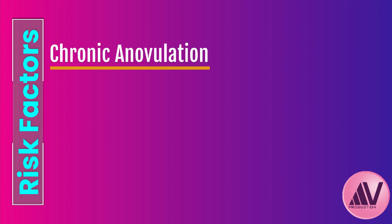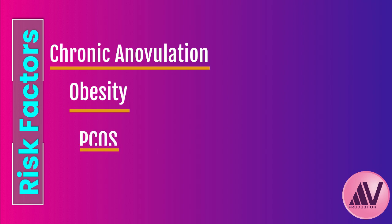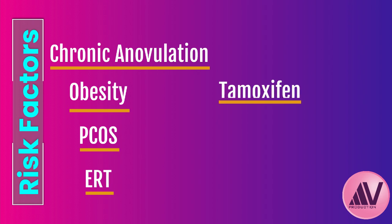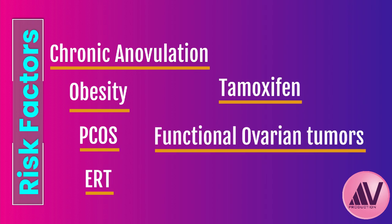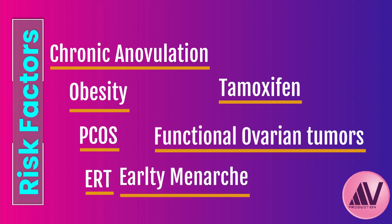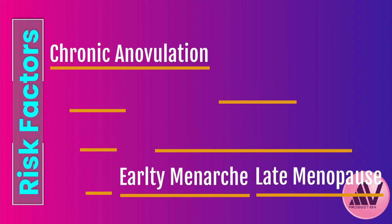Key risk factors include chronic anovulation, obesity — because fat tissue produces estrone, a type of estrogen — and PCOS, which often involves hormonal imbalances. Estrogen replacement therapy given without progesterone to someone who still has their uterus is literally unopposed estrogen. Tamoxifen, certain rare estrogen-producing ovarian tumors like granulosa cell tumors, and even early menarche or late menopause all increase lifetime estrogen exposure.